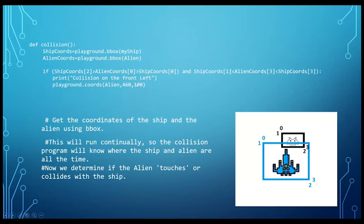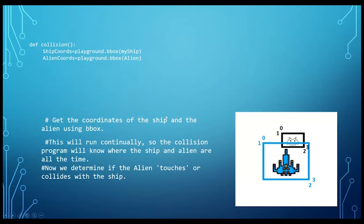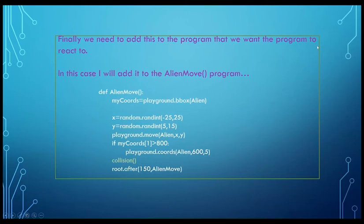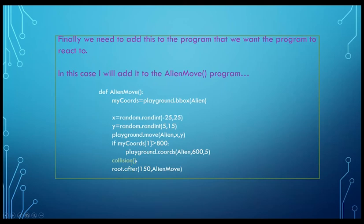Then we print 'collision is on the front left' and set playground coordinates equal to alien at position 460, 100 — this forces the alien back up in the program. Finally, we need to add this collision function to the alien move program. We can also add other conditions so that if it collides from the right or the left, it can handle those cases too. Let's see how this works in Visual Studio.